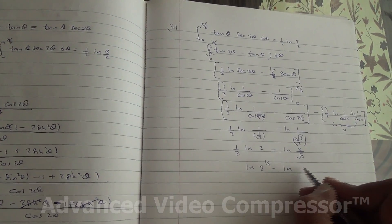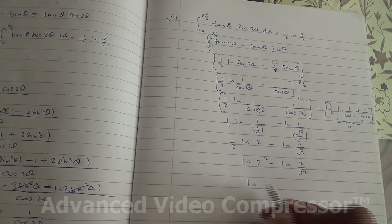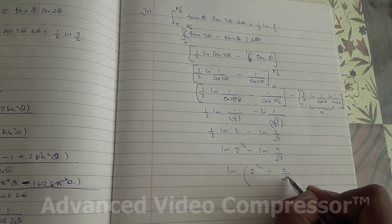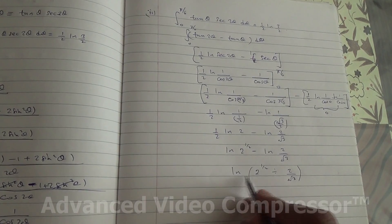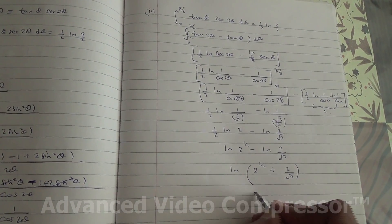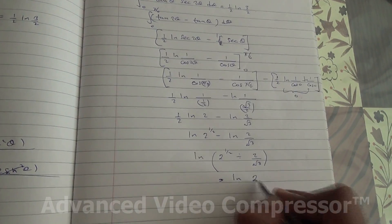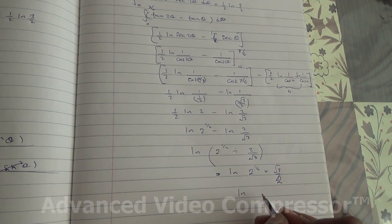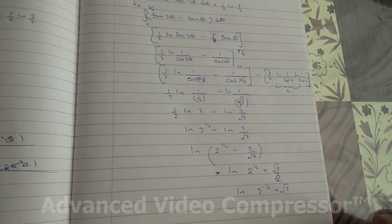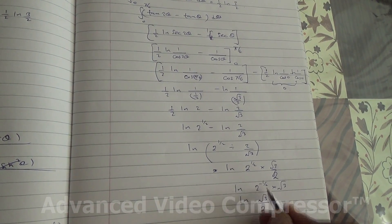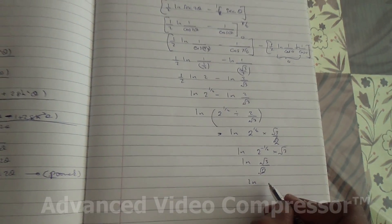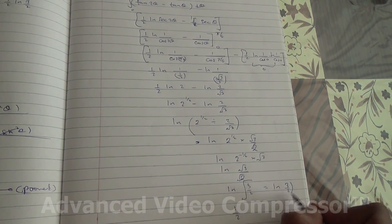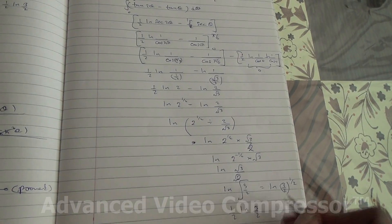So ln(2^(1/2)) minus ln(2/√3). When you subtract logarithms, you divide: ln(2^(1/2) divided by (2/√3)), which is ln(2^(1/2) multiplied by √3/2). So ln(2^(1/2) times √3/2), which equals ln(√3/√2) — that is ln(√(3/2)). Removing the root gives a power of half: ln(3/2)^(1/2), which equals ½ ln(3/2). Shown.